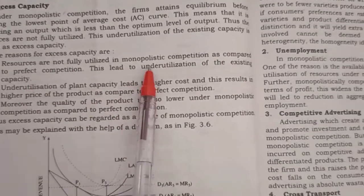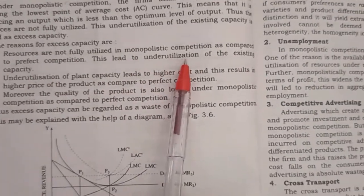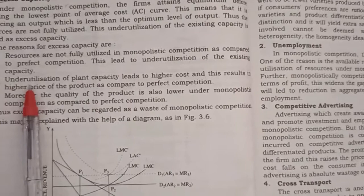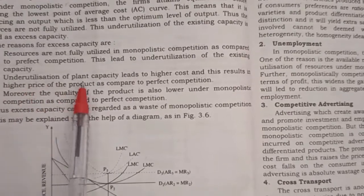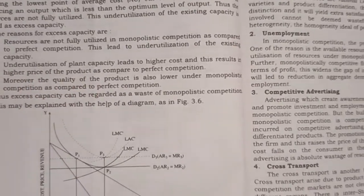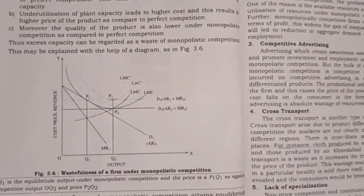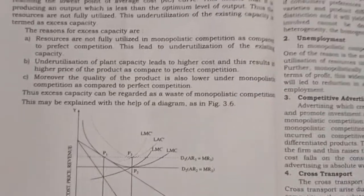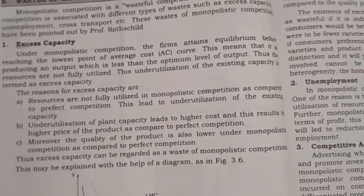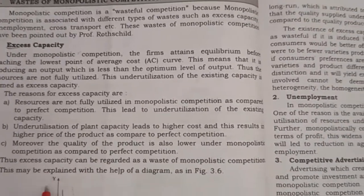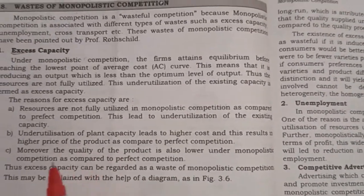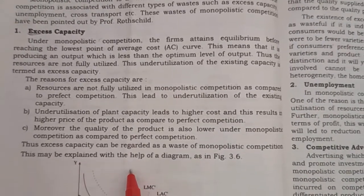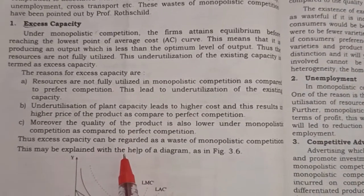Resources are not fully utilized in monopolistic competition. Under-utilization of plant capacity leads to higher cost. In simple words, excess capacity means the production manufacturing in your factory or firm — the product being manufactured at your plant.